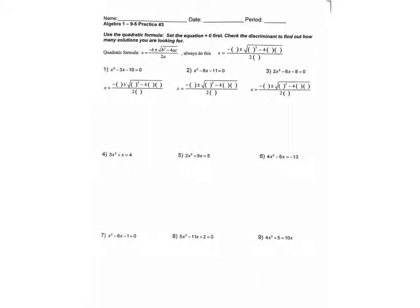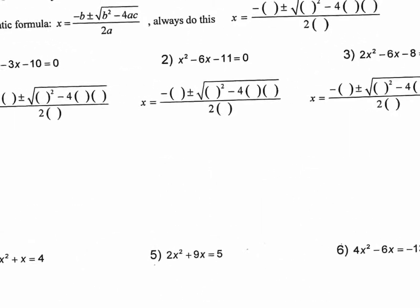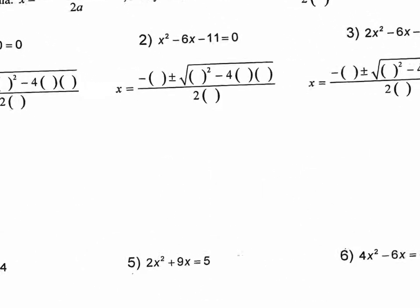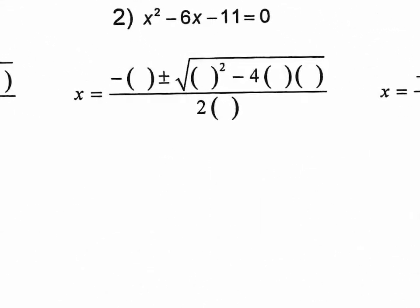Some of them end up working out very nicely, where you end up with a perfect square number inside of the root, and you could continue to do all the math and get two nice answers. But some of them you can't, and you're going to have to reduce your final fraction that also has a radical in it. Like number two or number nine — those have radicals where there aren't perfect square numbers on the inside of the square root. So let's do number two.